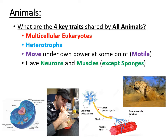The fourth and final key trait is that all animals — except for sponges — have neurons and muscles. Circle, star, highlight: sponges are the only animals not meeting this fourth qualification. Neurons are capable of sending electrical signals to other cells, and muscles contract and are big players in movement. So when you think of animals, know they share these four key traits, and trait number four — having neurons and muscles — the only exempt animal is sponges.